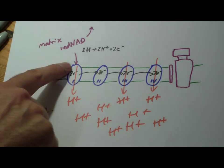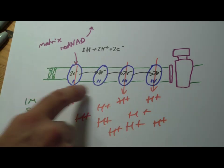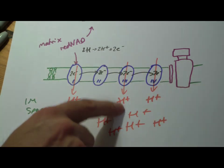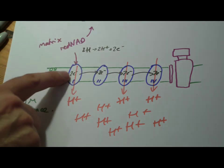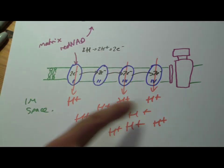So we got to this point where we said that hydrogen ions, protons, are being pumped through from the reduced NAD, it gets split and it's pumped through into this inter-membrane space.